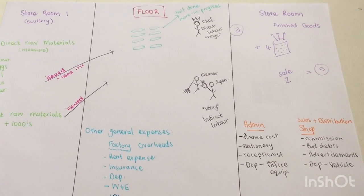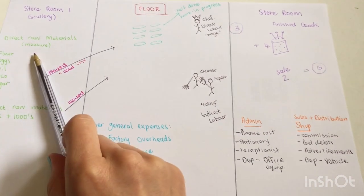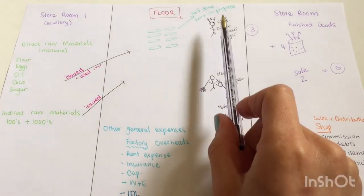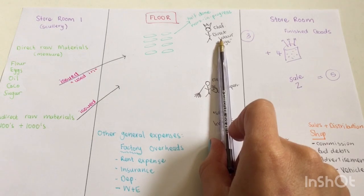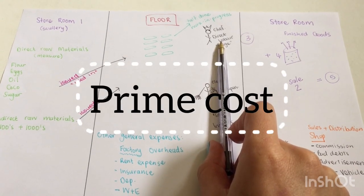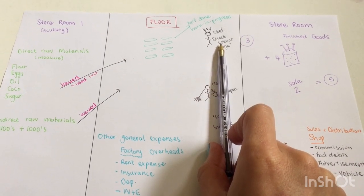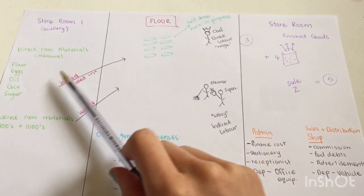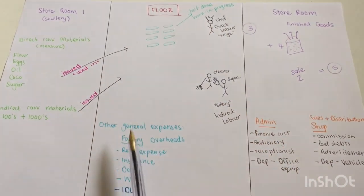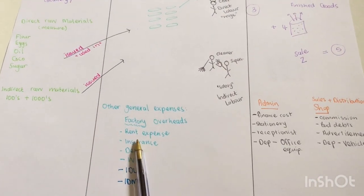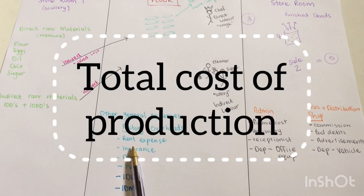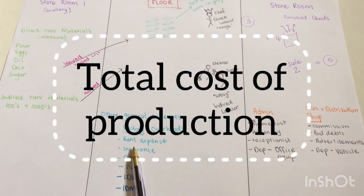Then you need to know that direct materials and direct labor added together is called prime cost. Then you need to know that the prime cost plus factory overheads is the total cost of production.